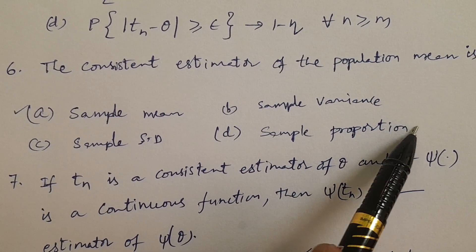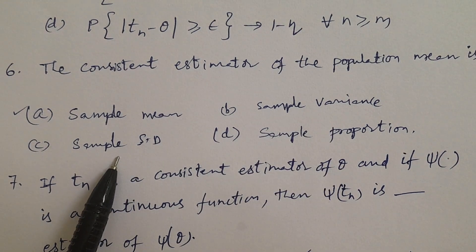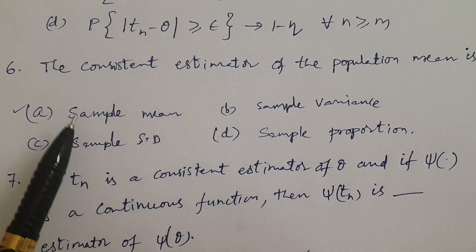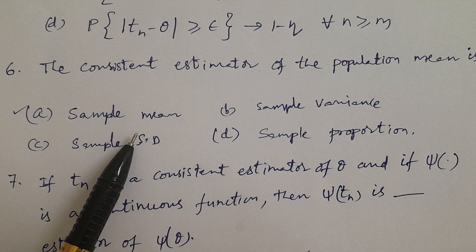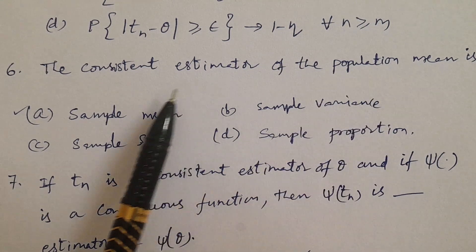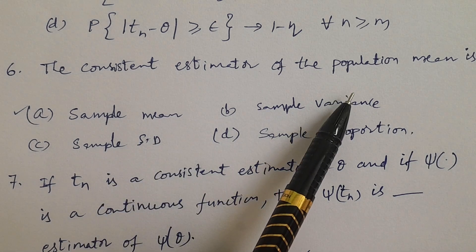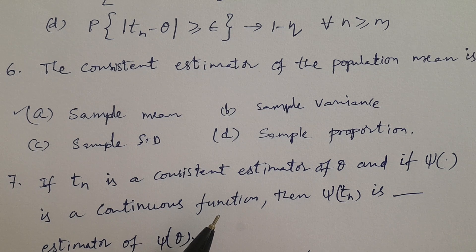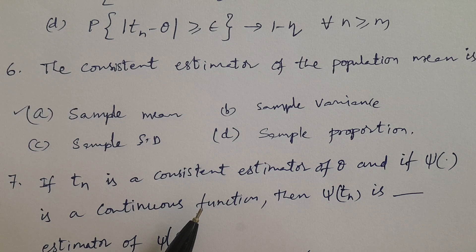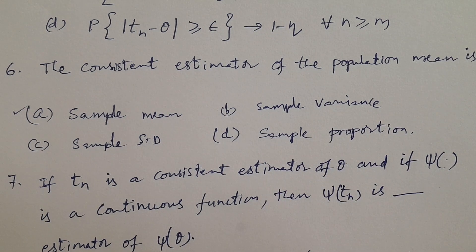Question number six: The consistent estimator of the population mean is — A. Sample mean, B. Sample variance, C. Sample standard deviation, D. Sample proportion. The correct answer is sample mean. Sample mean is a consistent estimator of population mean, and it also satisfies efficiency and sufficiency properties.